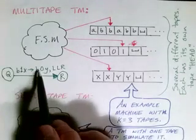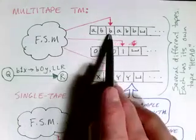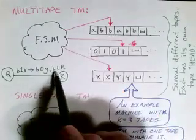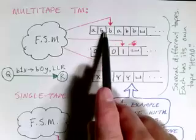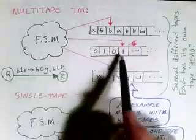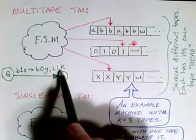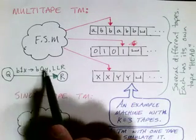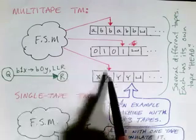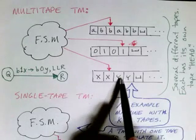We're going to overwrite the B with a B. In other words, we're not going to modify it. And we're going to move left. So this head will move left. We're going to overwrite the one with a zero. And this head will also move left. And finally, we're going to overwrite the X with a Y. And this head is going to move right. So we'll overwrite that X with a Y and move to the right.